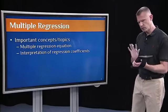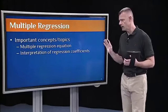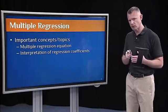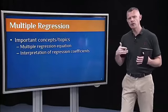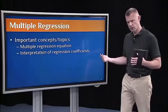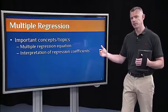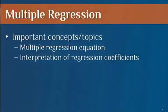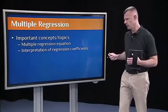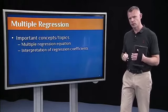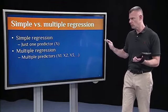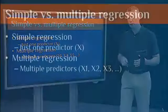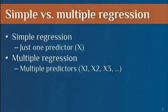Let's look at multiple regression, just an overview. The important things to take away here are the components of the multiple regression equation, and most importantly for this segment, how to interpret regression coefficients when there are multiple coefficients in the model. Just to make this distinction real easy: simple regression just has one predictor in the model. Multiple regression, you can have as many predictors as you want.